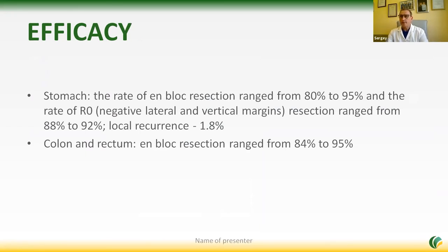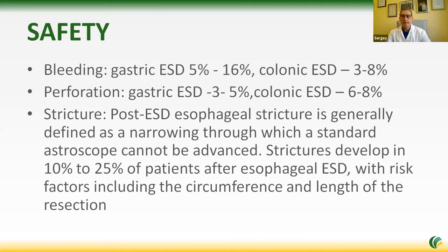Regarding efficacy for the stomach, the en-bloc resection rate ranges from 80% to 95%, and R0 resection ranges from 88% to 92%, with very low local recurrence rates. For colon and rectum, en-bloc resection ranges from 85% to 95%. Unfortunately, we lack data from all centers because we have no national register for ESD procedures. Regarding safety, for gastric ESD, bleeding rates are 5% to 16%; for colonic ESD, 3% to 8%. For perforation, gastric ESD is 3% to 5%, and colonic ESD is 6% to 8%. Post-ESD esophageal stricture is generally defined as a narrowing through which a standard gastroscope cannot be advanced, and strictures develop in up to 25% of patients after esophageal ESD.